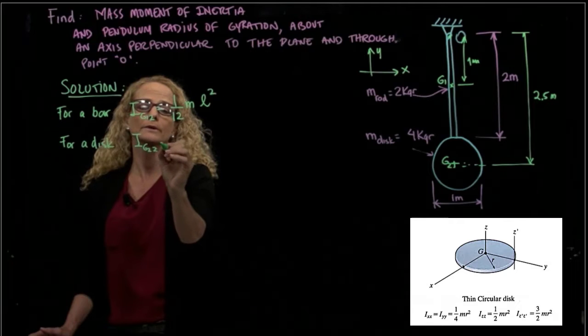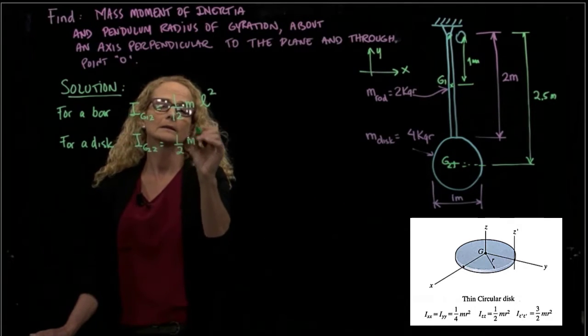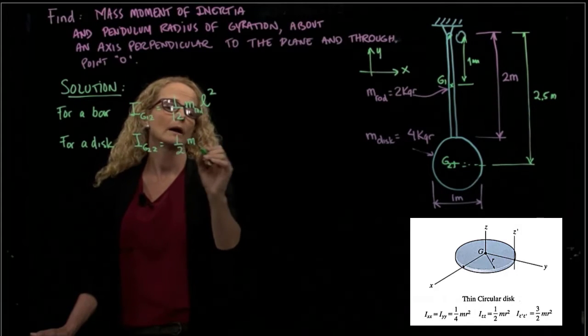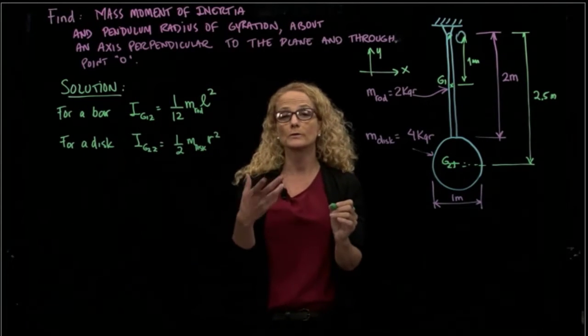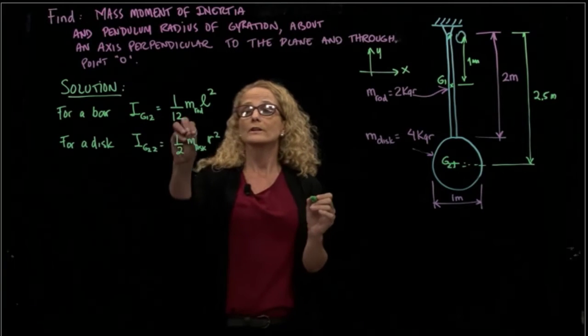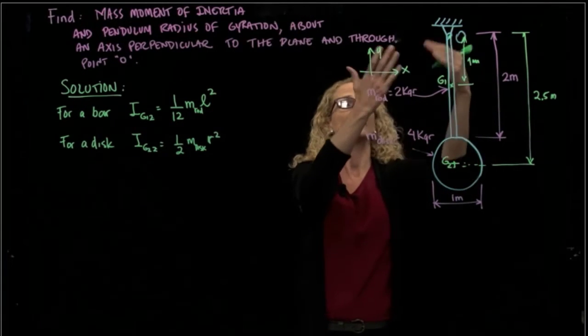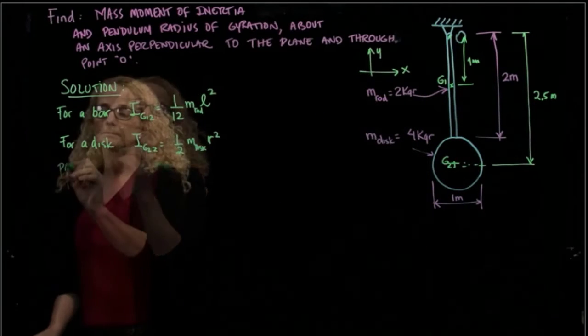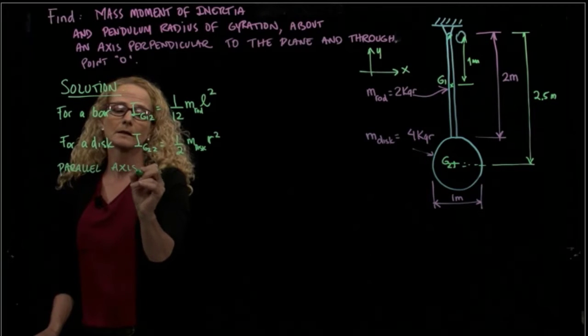also in Z direction, G2 in Z direction will be 1/2 mass, this is the mass of the bar or the rod, and this is the mass of the disc, will be radius squared. So those are the values that you find in the tables, and those are the values that we have to, so to say, move to or transfer to point O. For that we use the parallel axis theorem.